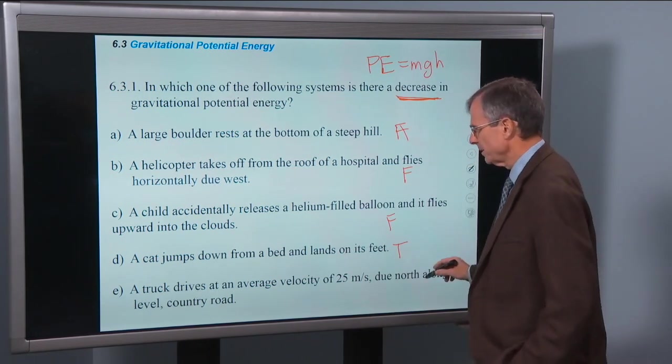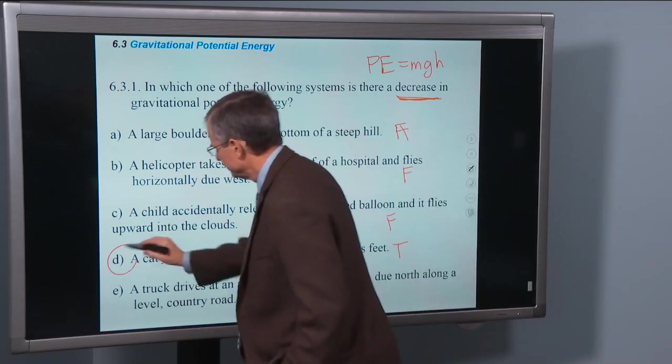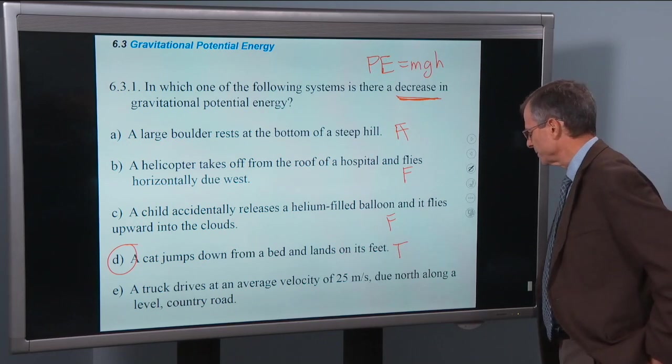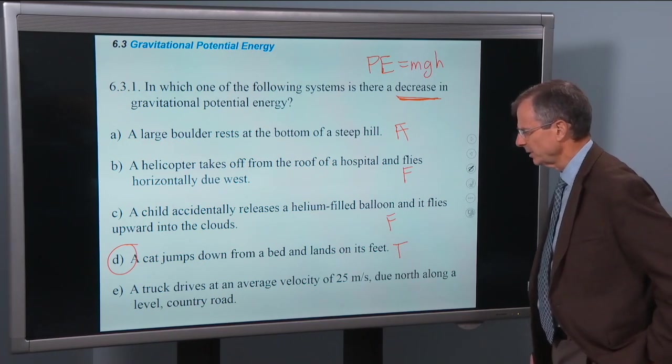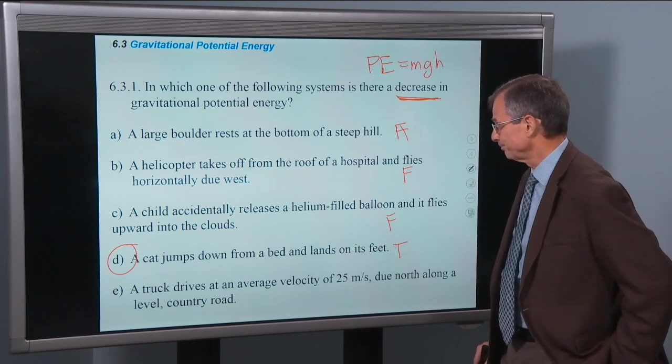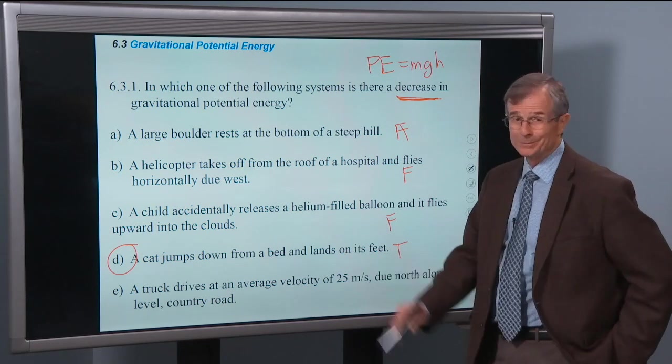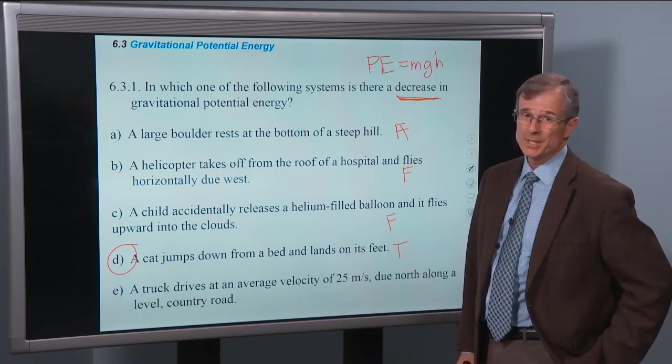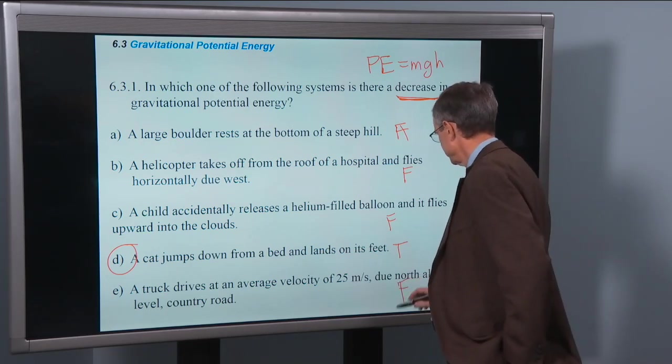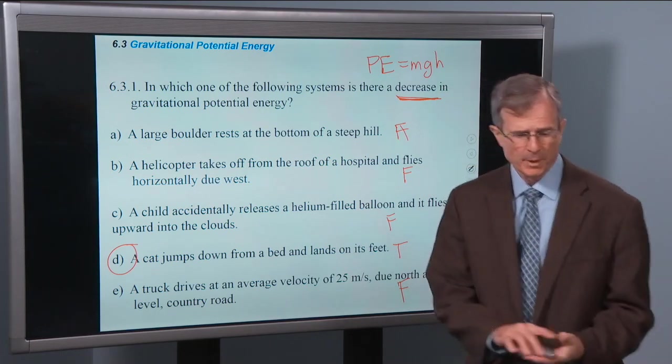Okay, that's the one we want. A truck drives at an average velocity of 25 meters per second due north along a level country road. What about that one? Well, it's level. The height's not changing. The gravitational potential energy is not changing. So that's not the one we want either.